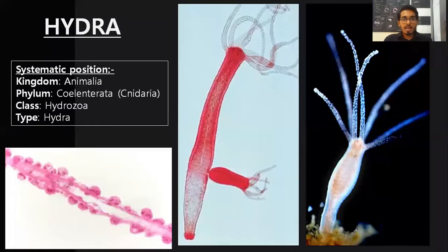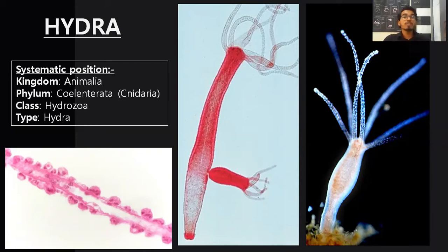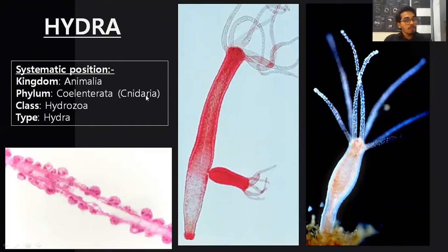The next specimen is hydra. Hydra belongs to kingdom Animalia, phylum Coelenterata, because it has a gastrovascular cavity inside — a cavity is present, hence the term Coelenterata. It also has special cells called stinging cells, also called cnidoblast or nematocyte. Because of these peculiar cells, this phylum is also called Cnidaria. It belongs to class Hydrozoa and the type specimen is hydra.